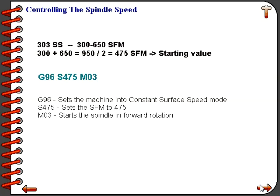Programming the machine to run in constant surface speed is very easy. We would command G96 S475 M03. G96 sets the machine into constant surface speed mode; the S475 was our SFM that we just got from that worksheet; and M03 starts the spindle in forward rotation. It should be noted that we can only have one M code per line.